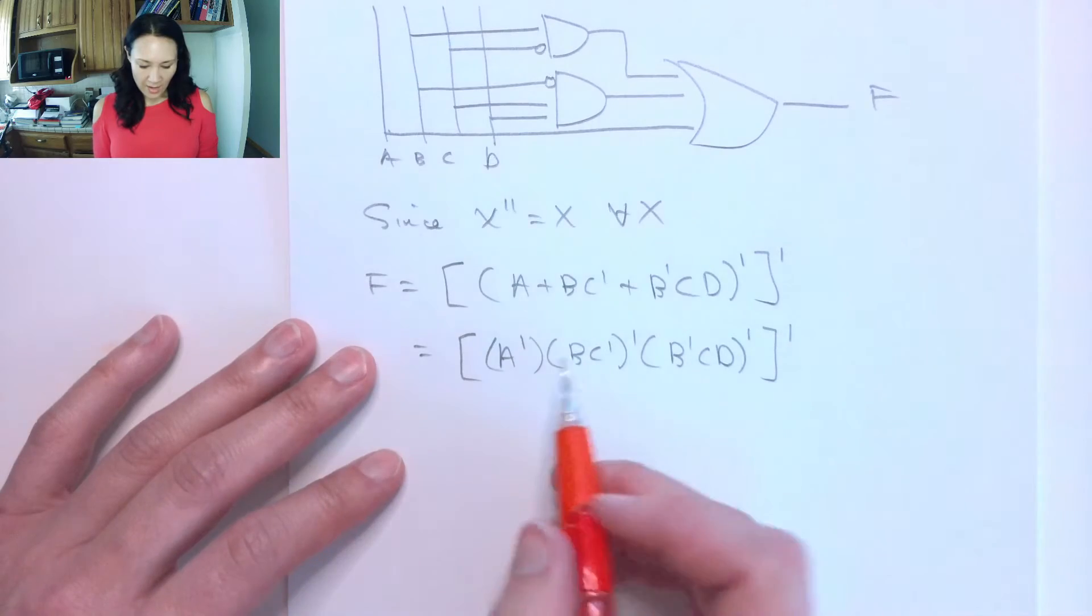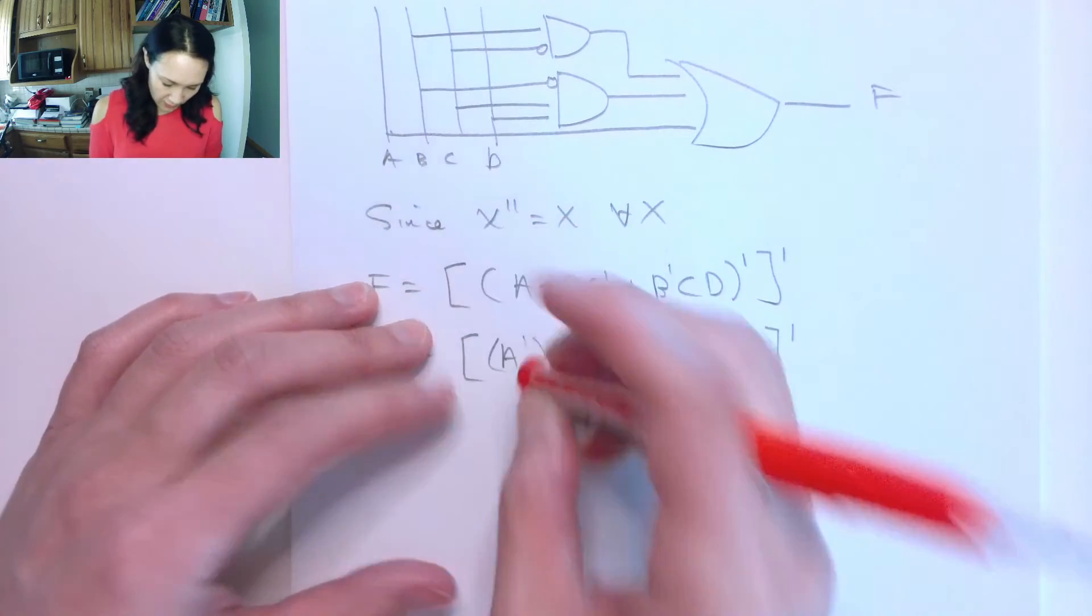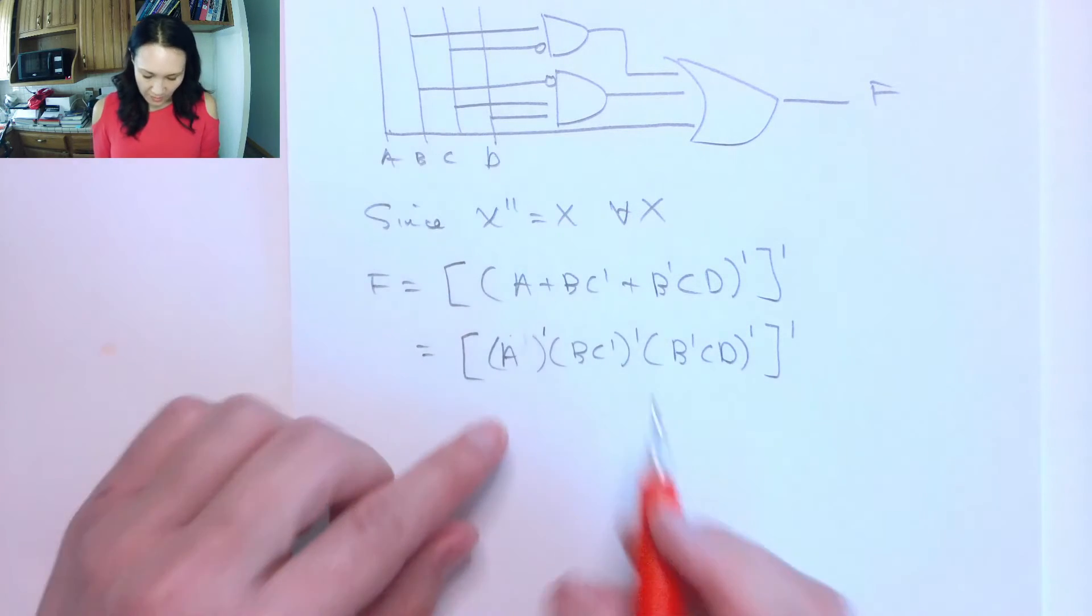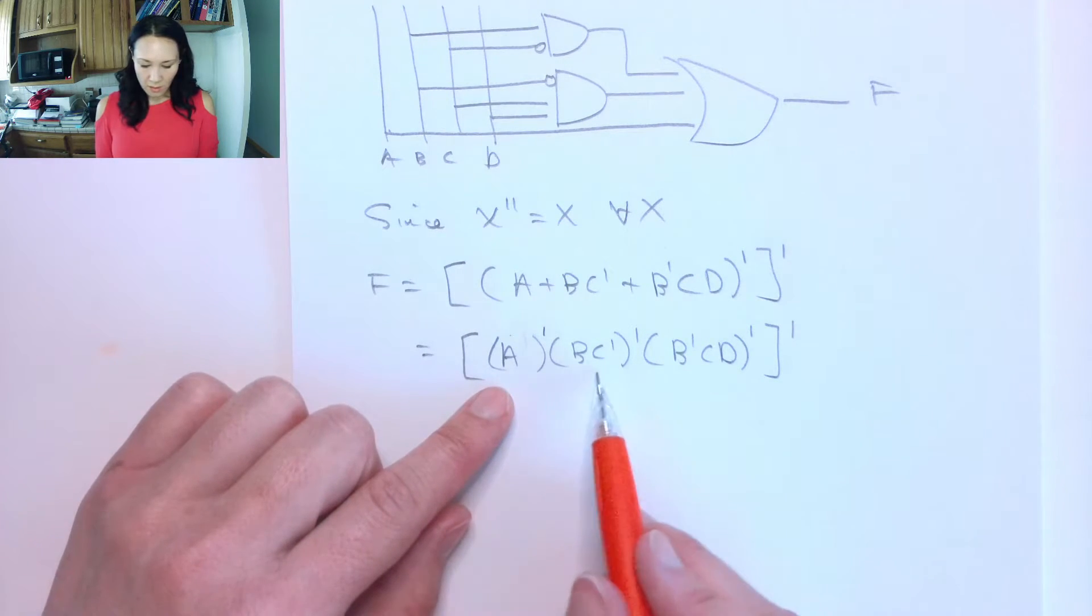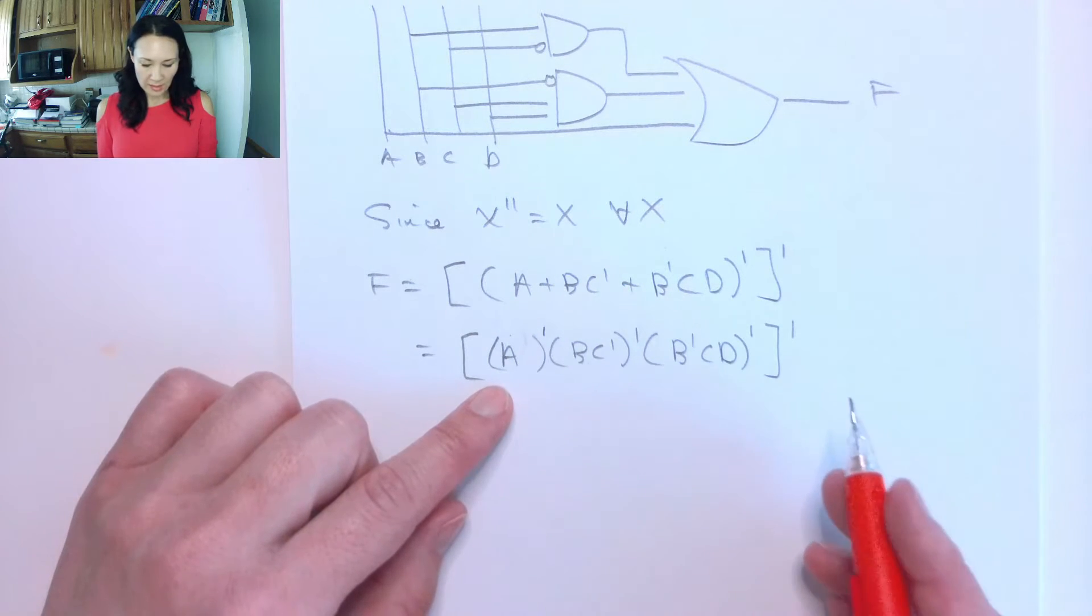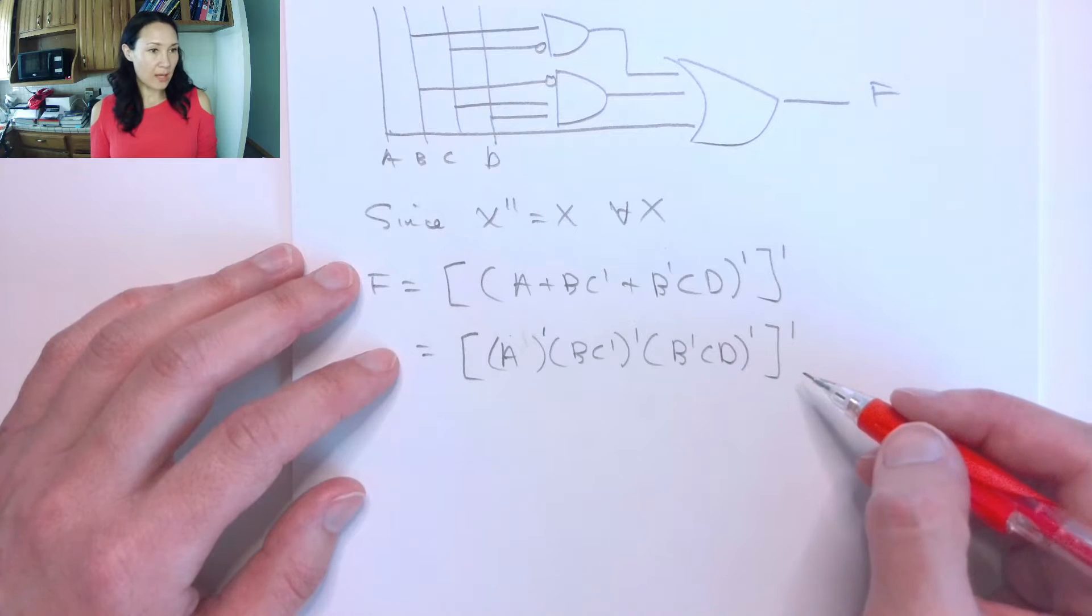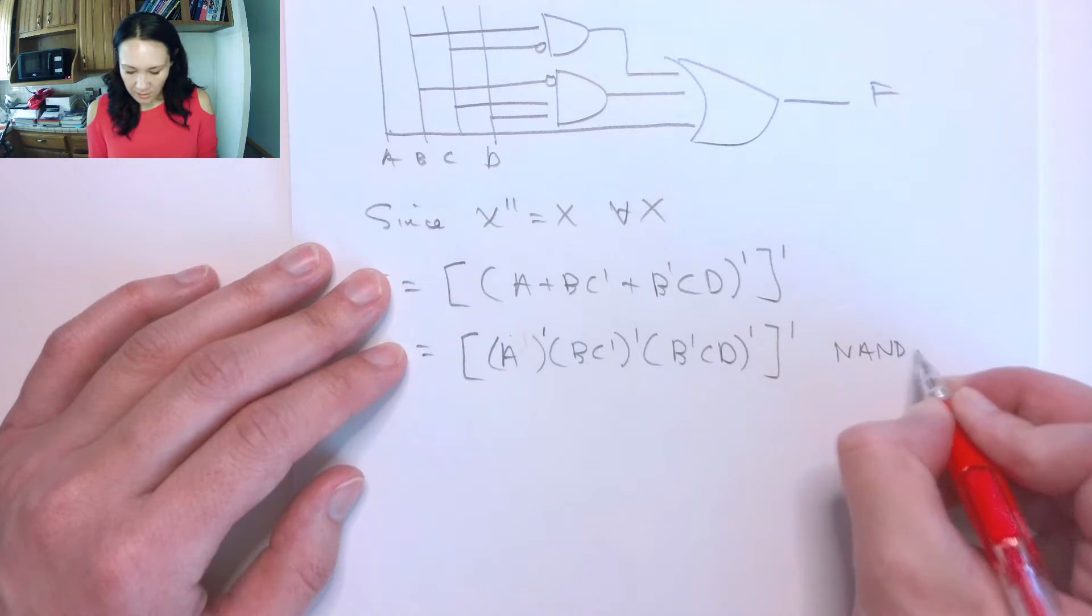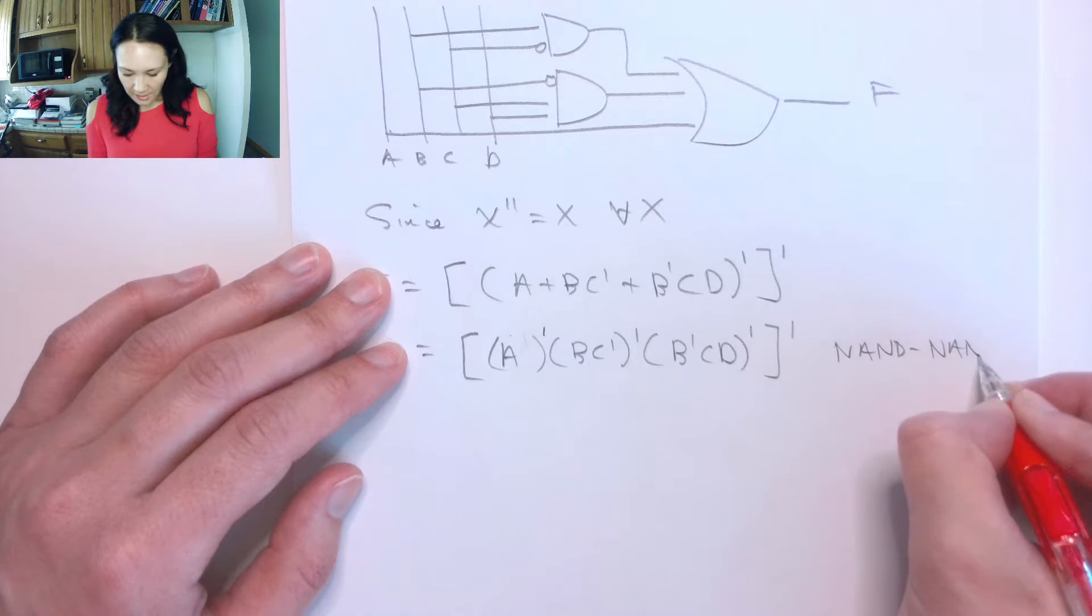So now I have, let me write this out here so you can see the pattern. All these things are actually being NANDed, and that result is being NANDed. So by applying De Morgan's one time, I end up with a NAND implementation.